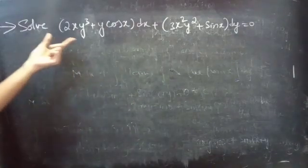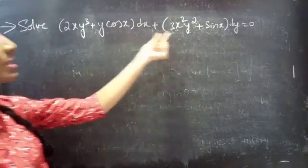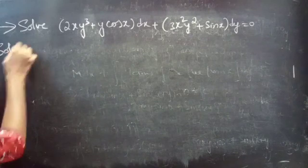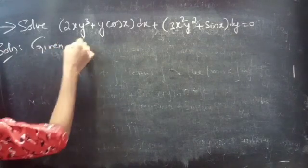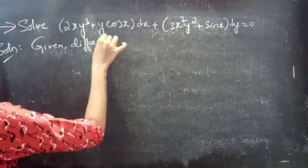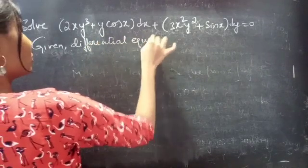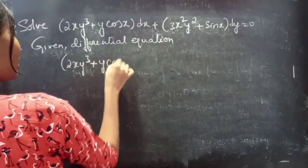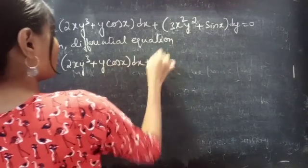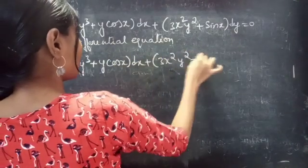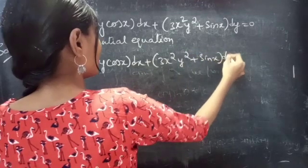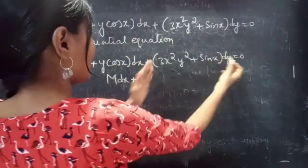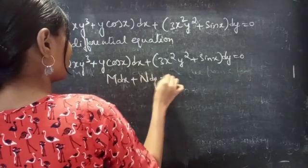Problem. Solve: (2xy³ + y cos x) dx + (3x²y² + sin x) dy = 0. Solution. Given differential equation: (2xy³ + y cos x) dx + (3x²y² + sin x) dy = 0, which is of the form M dx + N dy = 0.